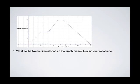Here's a question. What do the two horizontal lines on the graph mean? Explain your reasoning.